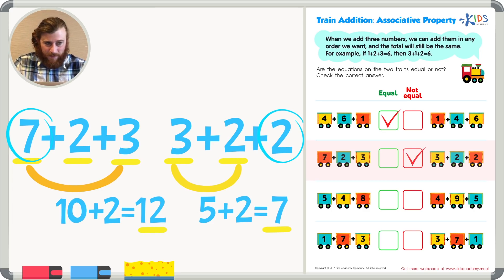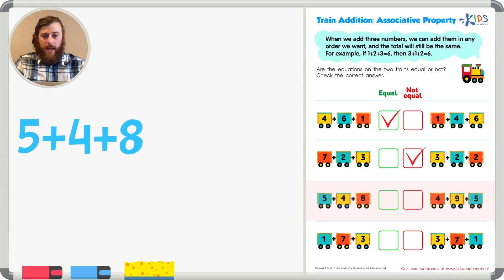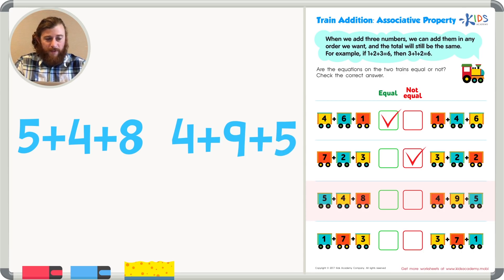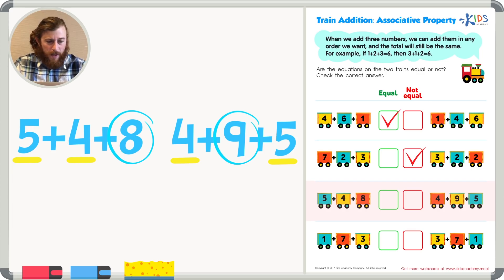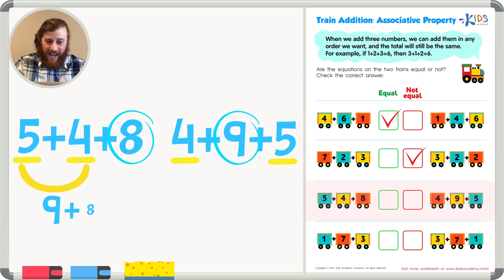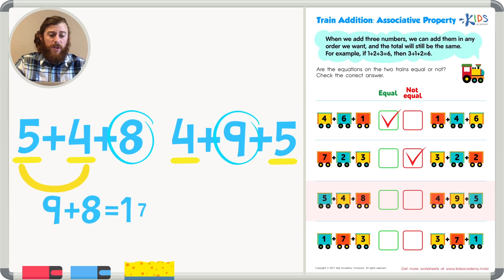Let's take a look at our third example. The first train is 5 plus 4 plus 8. The second train has 4 plus 9 plus 5. Let's see if we have any similar numbers. I have a 5 in the first train and a 5 in the second train, and a 4 in the first train and a 4 in the second train. But our last numbers are 8 and 9 — different. I'm starting to think these two trains are not going to be equal. But let's add them up. First I'm going to add 5 plus 4, which equals 9. Now I have to add 9 plus 8 — counting up: 10, 11, 12, 13, 14, 15, 16, 17. So 9 plus 8 is 17, and the sum of the first train is 17.